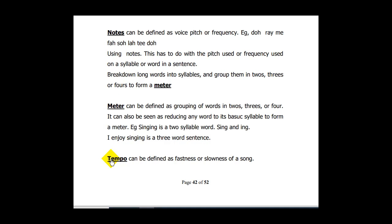Another musical term is tempo. Tempo can be defined as the fastness or slowness of a song. For example: 'I want to sing... I want to sing... I want to sing' — I have just varied the fastness or slowness. If I say 'I enjoy singing' slowly and then 'I enjoy singing' faster, the last one is faster than the first. That is tempo.